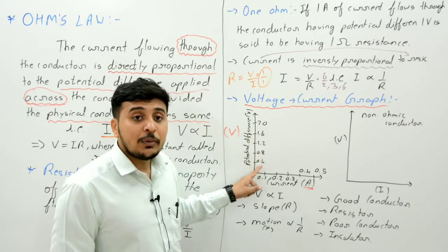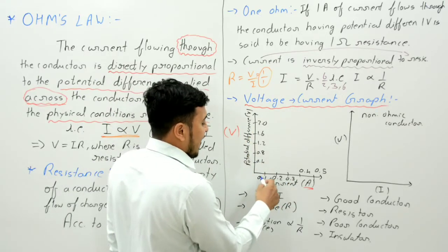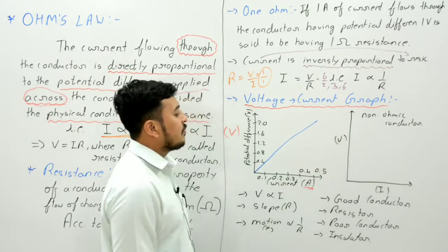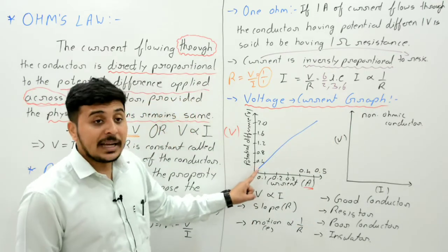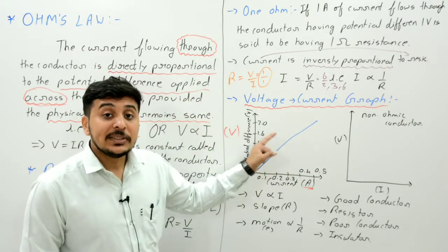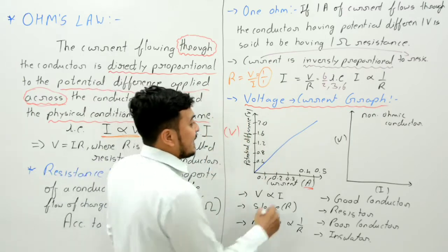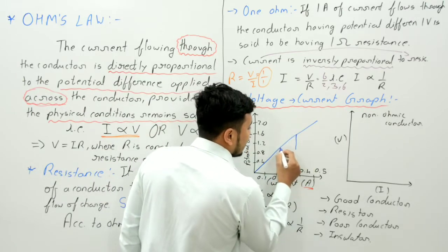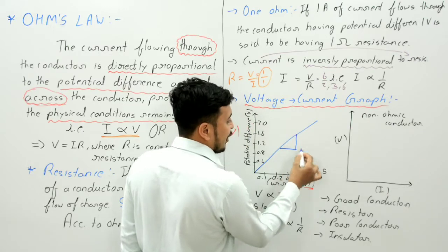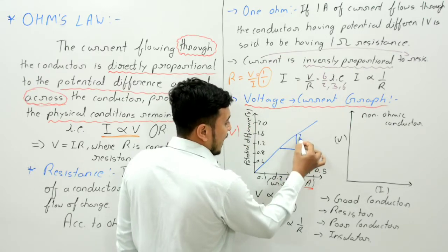So with different voltage values, you check the corresponding current. When you look at the graph, you get a straight line graph. A straight line graph — if you see a graph like this, it has a slope. The slope of this graph is y divided by x.